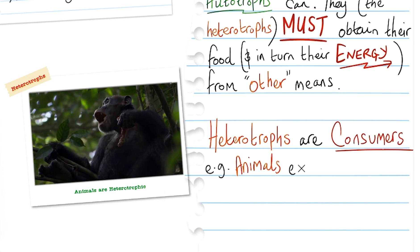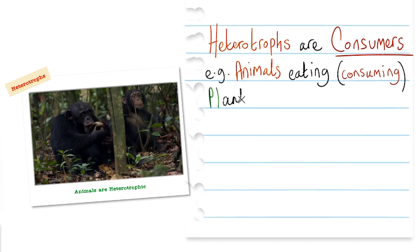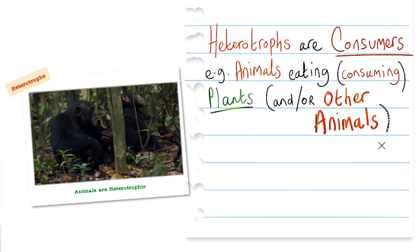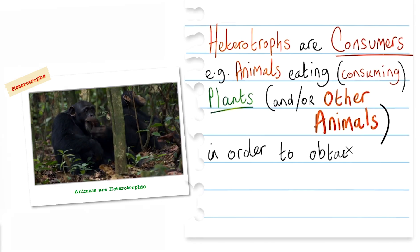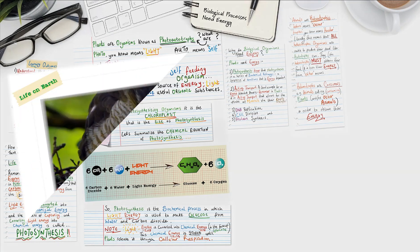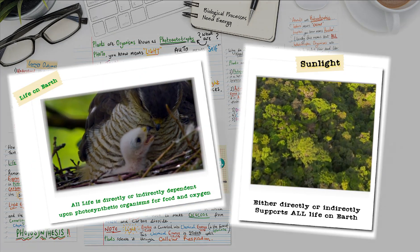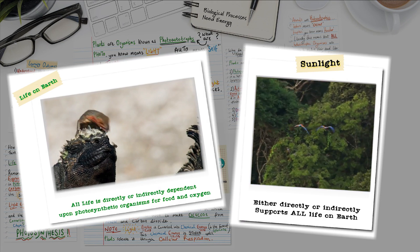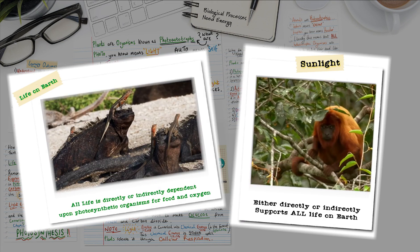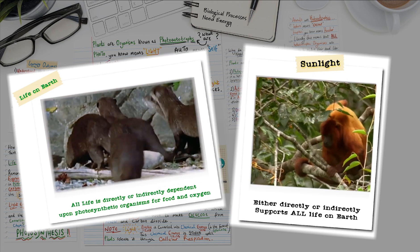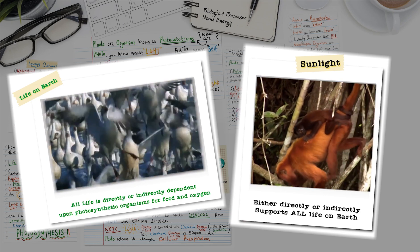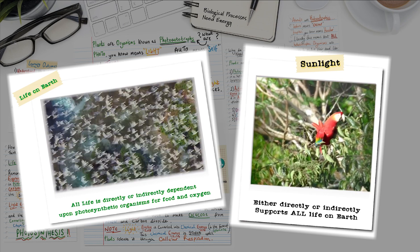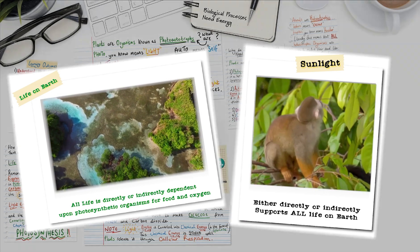For example, animals eating and consuming plants and/or other animals, and they do this in order to obtain their energy. And once again, we return to the key point that all life, either directly or indirectly, is dependent upon the photosynthetic organisms for food and oxygen, which is a very important by-product of photosynthesis.